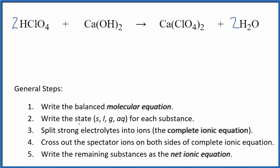At this point, we can write the states for each substance. That'll look like this. So HClO4, that's a strong acid, it'll be aqueous. Calcium hydroxide is considered a strong base, that'll be aqueous. And then compounds with the perchlorate ion, they're very soluble. Water, that's a liquid. So we have our states.